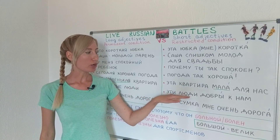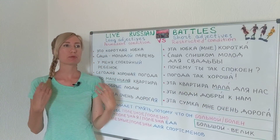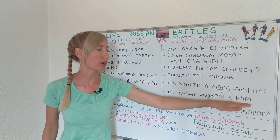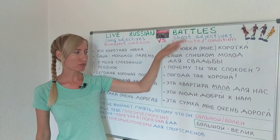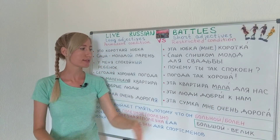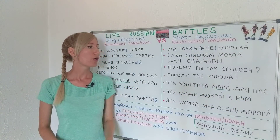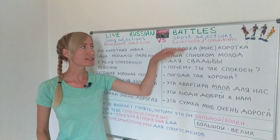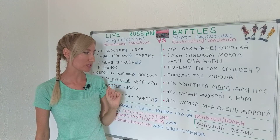Это добрые люди — these are kind people, a general statement most would agree with. Compare with these people are kind to us — we use the short form because it is restricted by the condition: to us. They were kind to us in a certain situation, and we want to underline their kindness in that specific context.